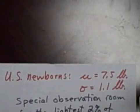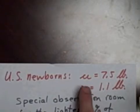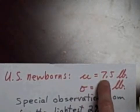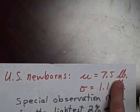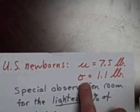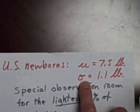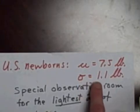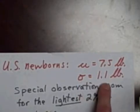I'd like to do another sample problem about a normal distribution. Here's some information about US newborn babies. The mean average weight of newborns in the United States is approximately μ equals 7.5 pounds. The standard deviation, the amount that those weights vary, has been calculated to be approximately 1.1 pounds.